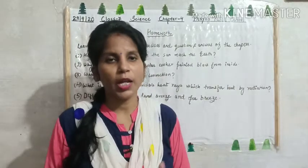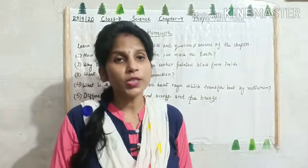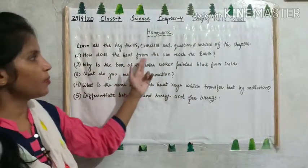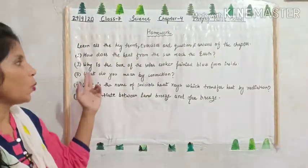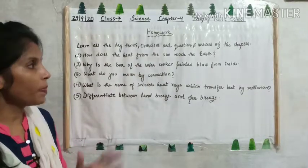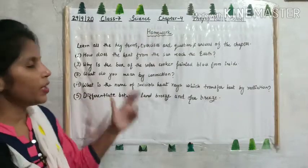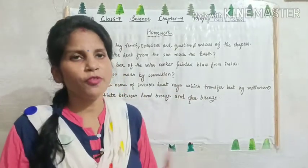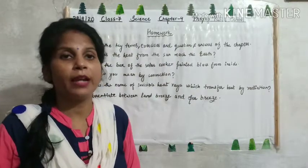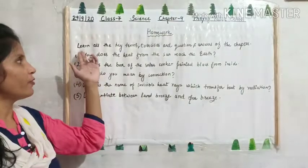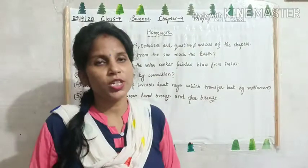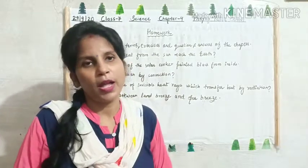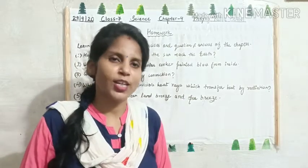Children, I hope you all have understood it well. Watch the video properly and do all the homework. Today's homework: Question 1 — How does the heat from the sun reach the earth? Question 2 — Why is the box of the solar cooker painted black from inside? Question 3 — What do you mean by convection? Question 4 — What is the name of the invisible heat rays which transfer heat by radiation? Question 5 — Differentiate between land breeze and sea breeze. Besides that, you have to learn all the key terms, all the exercises and question answers of the chapter. I can take a surprise test any day in the middle of the online classes, so children, be prepared. Please like and subscribe to my video. Thank you and have a great day.